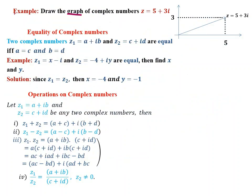Example: Draw the graph of the complex number z equals 5 plus 3i. Here the real axis value is 5 and the imaginary axis value is 3, so we plot the point accordingly. Thus z equals 5 plus 3i is represented on the complex plane.